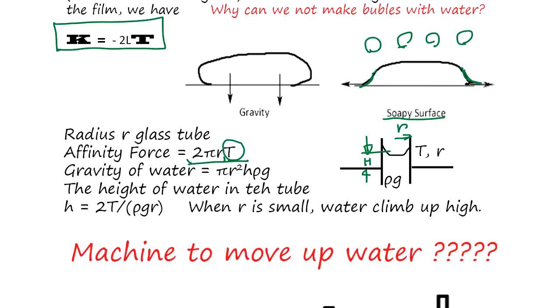The gravity of the water is density ρ, ρg, and the height is h. This is the area. If you equal this, you get height is 2t over ρgr. So when r is small, water climbs up high.